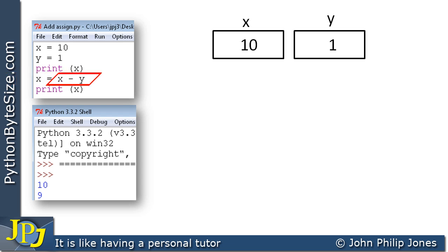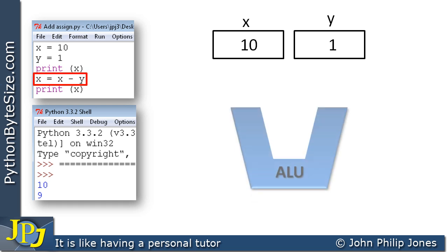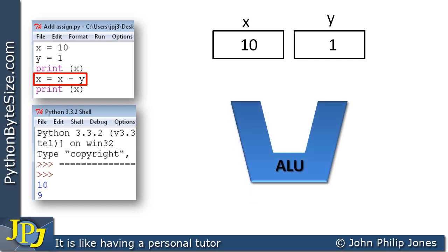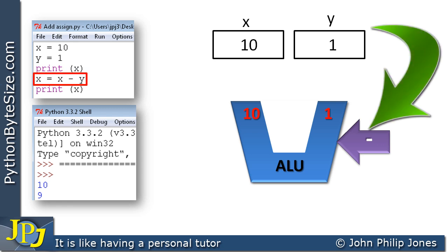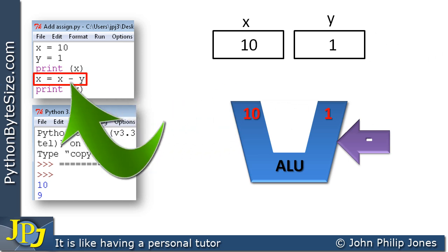The next line of code is X assigned X minus Y. When this program statement is executed it will control the hardware — specifically the arithmetic and logic unit inside the central processing unit, represented here as ALU. What it will do is take the contents of X and Y, pass copies of them to the inputs of the arithmetic and logic unit, and then subtract. The reason a subtract takes place is because of this subtract operator here.